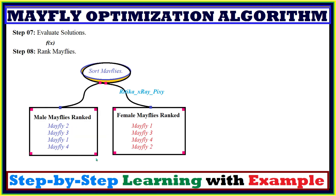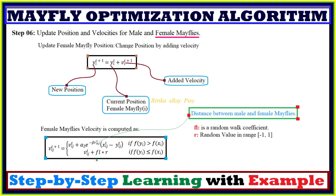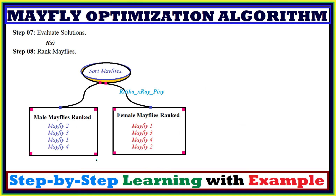In step 7, we evaluate the solutions. After updating the positions and velocities for male and female Mayflies, we calculate the fitness value for each and then rank the Mayflies according to their fitness value. For example, if we have four male and four female Mayflies, we rank them as first best, second best, third best, and so on — separately for male and female.